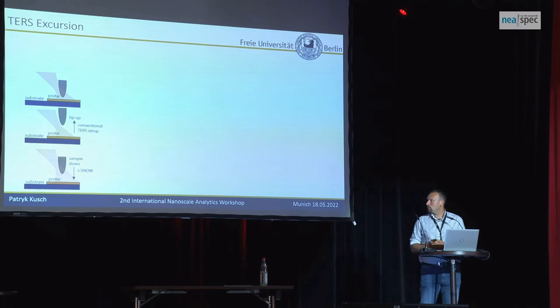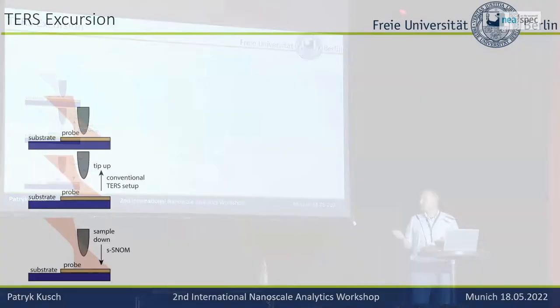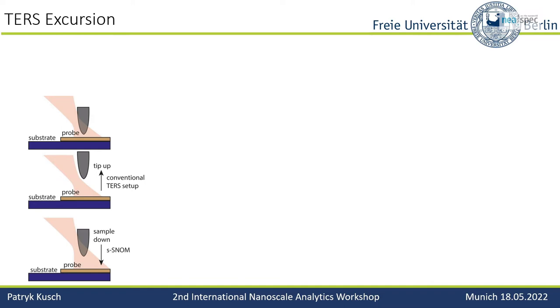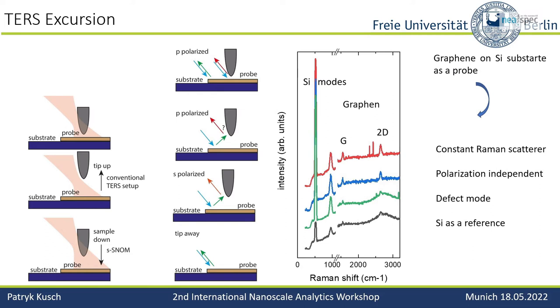In our SNOM setups, what actually happens is the sample goes down while the tip is still illuminated by the light. So we can have sample-tip scattering and still some mirror effect, because the tip acts as a mirror. We then did several experiments: we placed a tip down for graphene spectra. We use graphene because it is a constant Raman scatterer, polarization-independent, has a D-band that is typically very local, and it's on silicon — so we can use silicon as a reference.